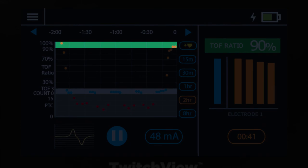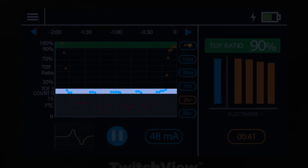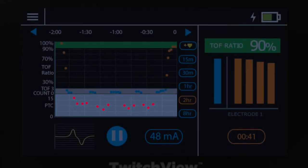A plot in the green portion of the chart represents a TRAIN-4 ratio of 90% or greater. A point in black represents a TRAIN-4 count of 4 with a TRAIN-4 ratio below 90%. Light gray represents a TRAIN-4 count between 0 and 3, and dark gray represents a post-TATANIC count measurement.